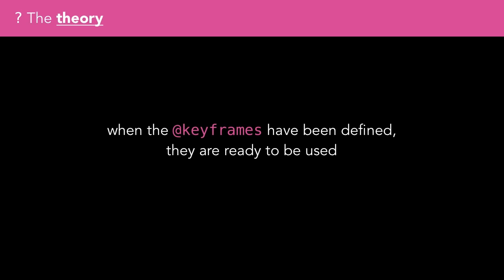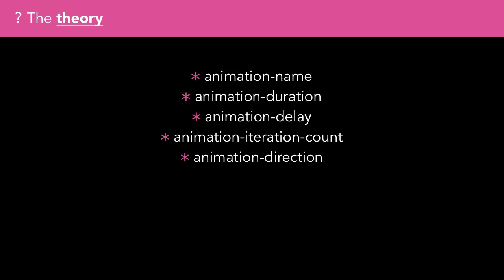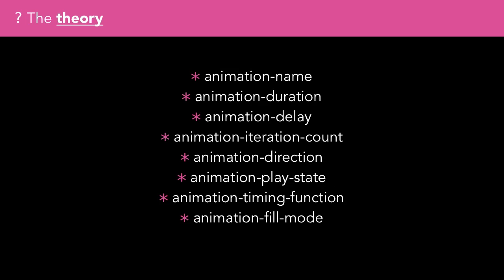When keyframes have been defined, they're used in conjunction with the animation-name property. There are a series of animation properties to configure your animation: animation-name specifies the block of keyframes to use; animation-duration specifies how long the animation lasts; animation-delay specifies any delay before it starts; animation-iteration-count specifies the number of times to repeat; animation-direction can play forwards, in reverse, or alternate back and forth; animation-play-state allows the animation to be paused and resumed; animation-timing-function determines the acceleration curve between keyframes.